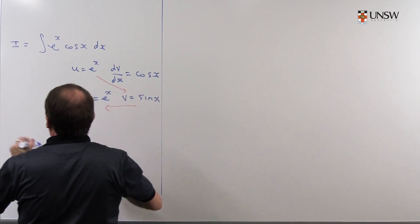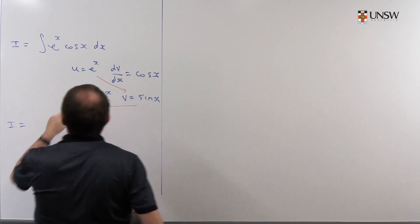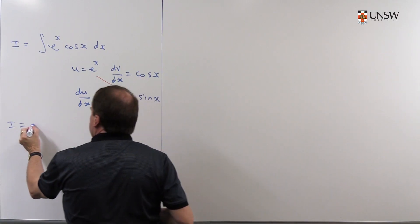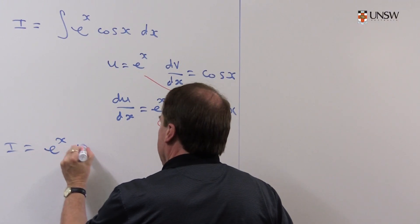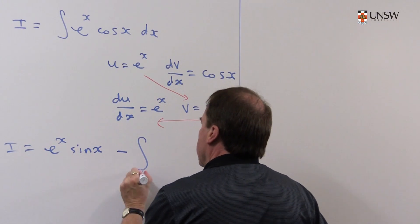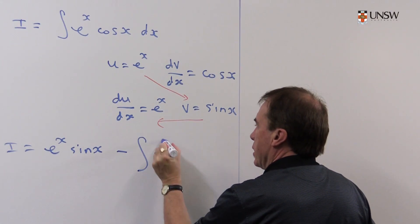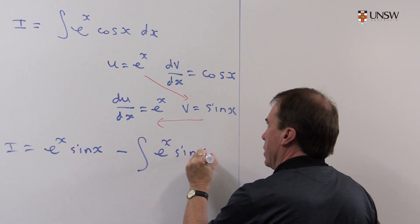So the integral i then is equal to uv, so I multiply those together. That's e to the x sin x minus the integral of v du dx. So that's e to the x sin x dx.